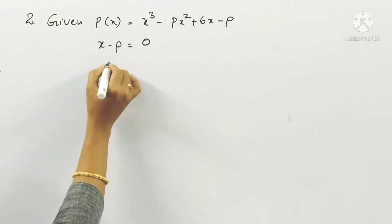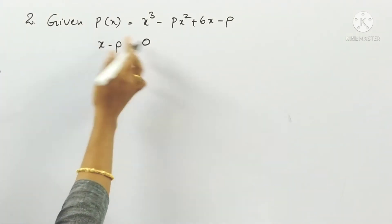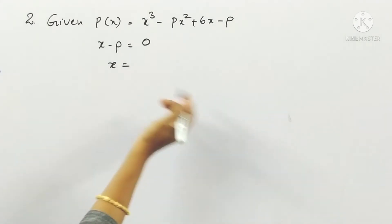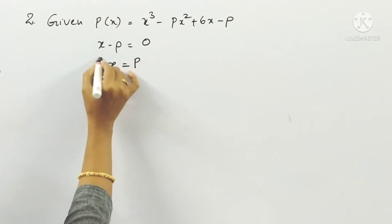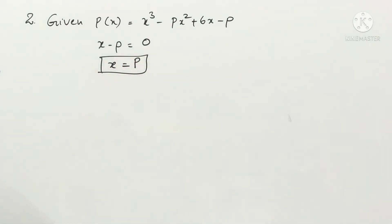What is the value of x? If you transpose minus p to the right side it will be plus, so x value is p. Now we have to calculate P(p), so we have to substitute p in the place of x.